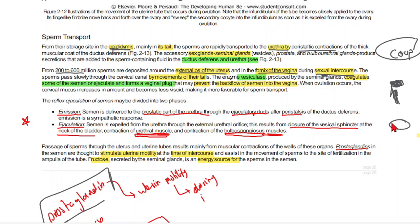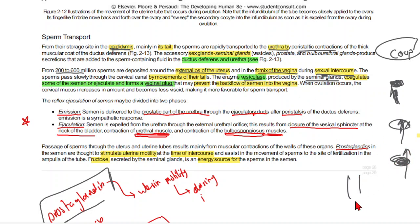The cervix has a fluid or mucus-like structure. Enzymes from seminal vesicles cause some of the ejaculated semen to form a vaginal plug, which prevents backflow of the sperm. When sperm enter through the cervix, a coagulation plug forms to prevent backward movement of the sperm.